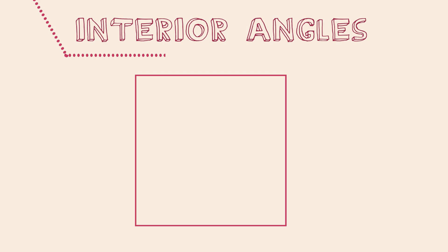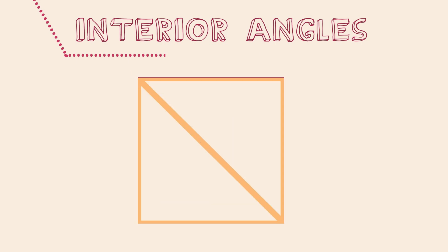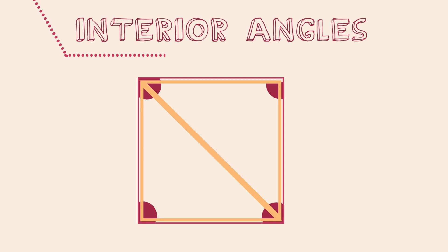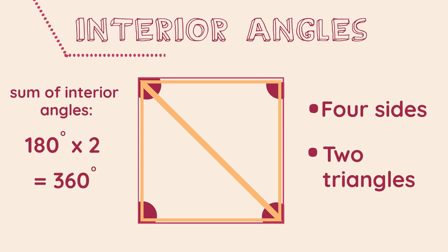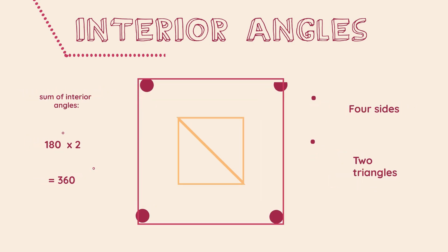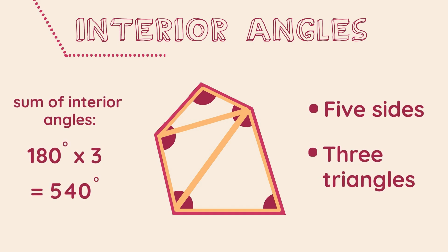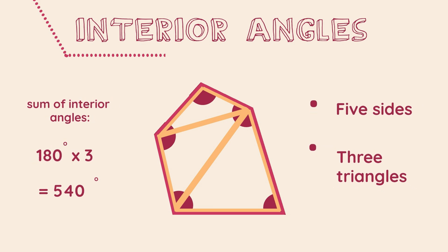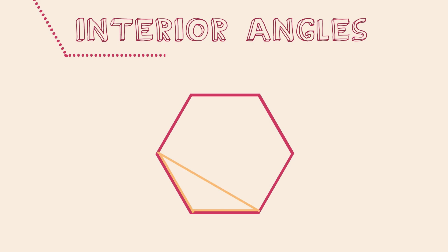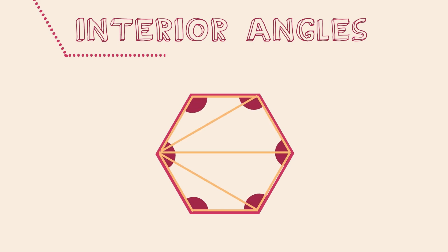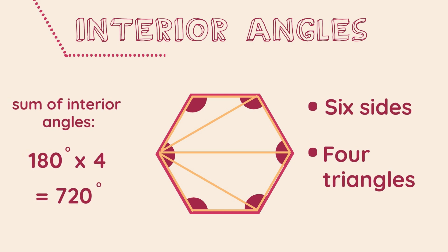Now let's look at this square. Notice that we can split the square up into two triangles exactly. We can use our knowledge of the interior angles of a triangle to calculate the sum of the interior angles of the square — as we have two triangles, the sum equals two lots of 180 degrees. Next we have an irregular pentagon which splits into three triangles, so the sum of interior angles equals three lots of 180 degrees. Here we have a hexagon which can be split into four triangles, so the interior angles add up to four lots of 180 degrees.